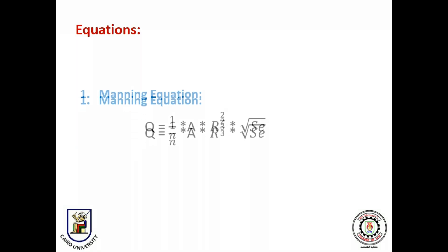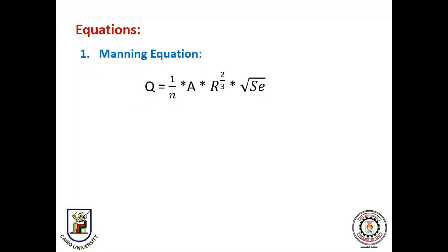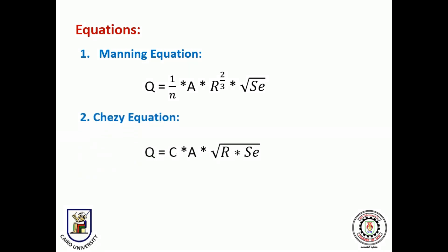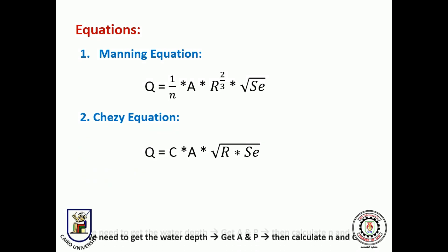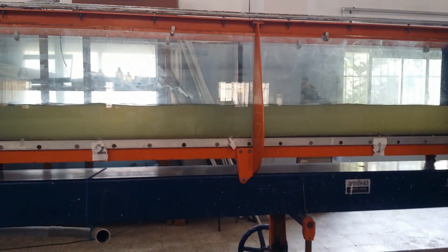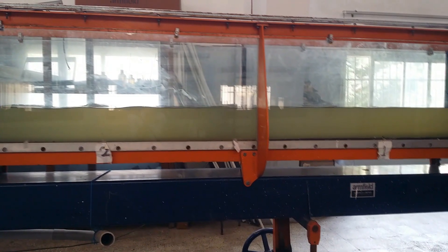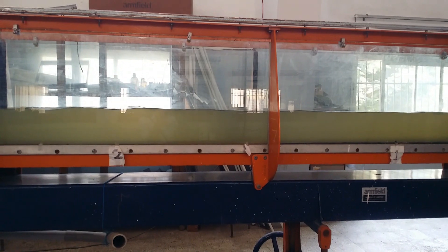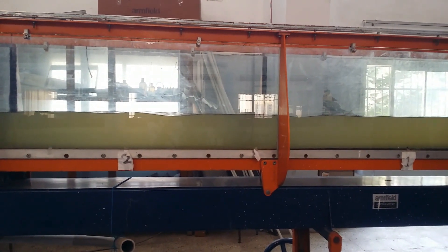The equations to be used. Since we want to get Manning's coefficient and Chezy's coefficient, we shall use Manning and Chezy equations. We need to get the water depth, then calculate the area and the wetted perimeter, and thus we would be able to get N and C. We use SE rather than S-naught because the flow in the flume is definitely non-uniform — the flume is only 10 meters long, which is relatively short to allow uniform flow to develop, in addition to the existence of the tail water gate to control the water level.